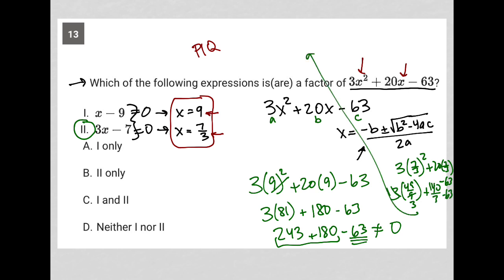so I'd have 49 thirds plus 140 thirds minus 63 is equal to 0. This becomes 189 over 3. 189 divided by 3 is 63. So I'd have 63 minus 63, which is equal to 0, and that's why choice or option 2 works here. So choice B is the only correct answer.